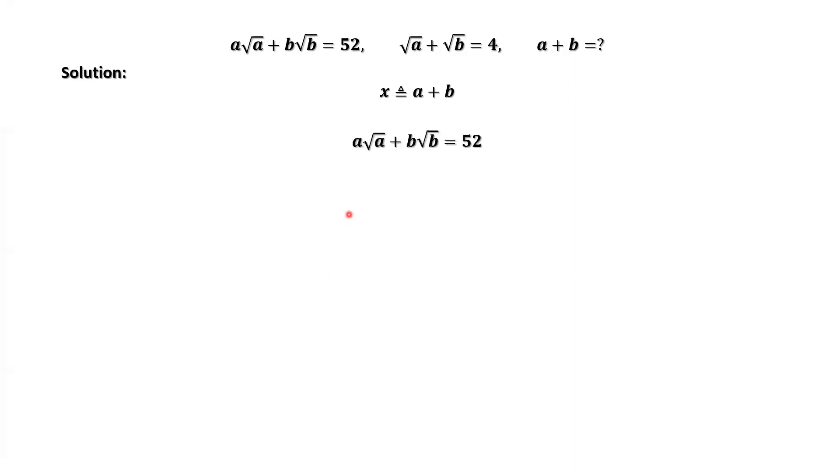This is one of the given conditions. a times square root of a plus b times square root of b equals 52.